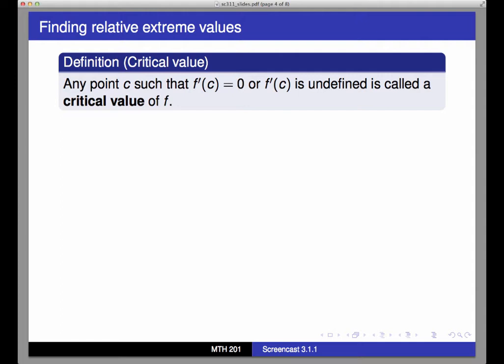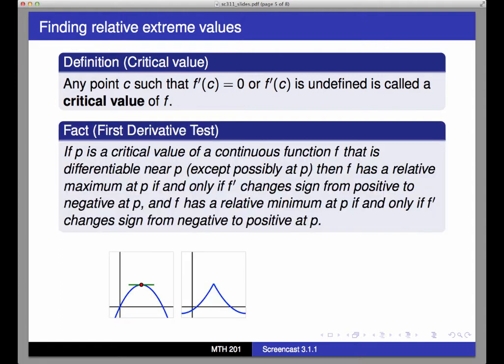And the importance of critical values lies in the first derivative test, which says that if p is a critical value of a continuous function that is differentiable near p, but not necessarily right at p, then f has a relative maximum at p if and only if f prime changes sign from positive to negative at p. And f has a relative minimum at p if and only if f prime changes sign from negative to positive at p.